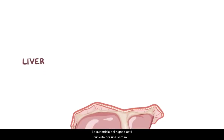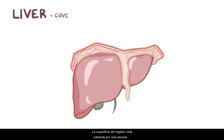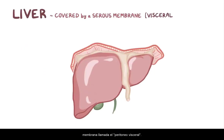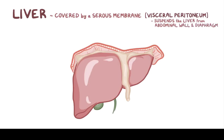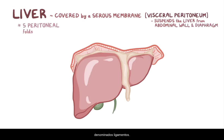The surface of the liver is covered by a serous membrane called the visceral peritoneum. The visceral peritoneum folds over on itself, and it suspends the liver from the abdominal wall and the diaphragm. There are five of these peritoneal folds, and they're referred to as ligaments.